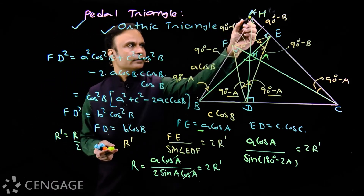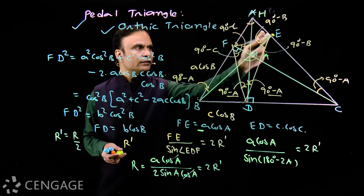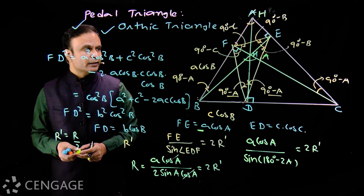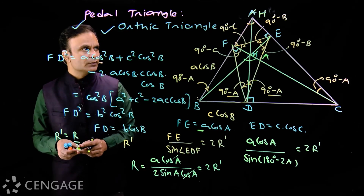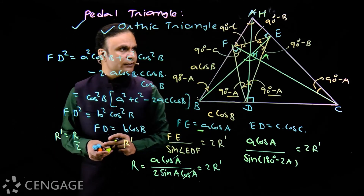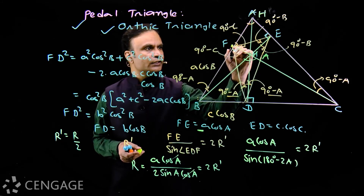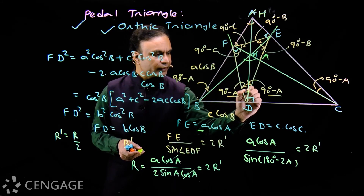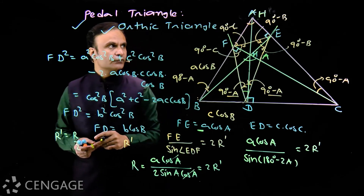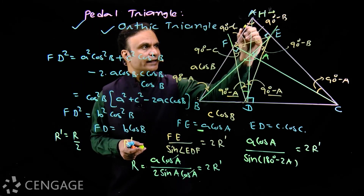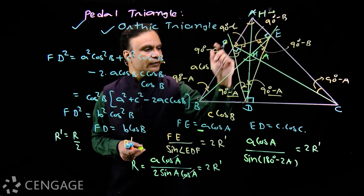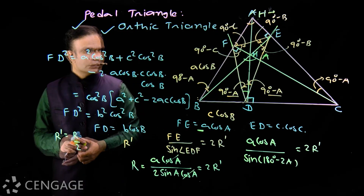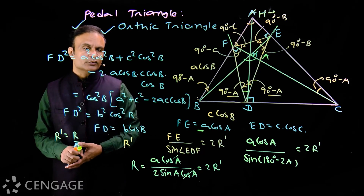In the obtuse case, orthocenter H is the excenter of triangle DEF opposite to vertex D. A triangle has three excenters opposite to its three vertices. At the excenter opposite to vertex D, the external angle bisectors of angles E and F and the internal angle bisector of angle D intersect. We will study excenters in detail in one of the coming videos.